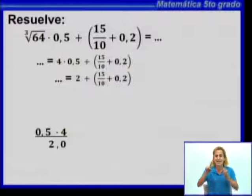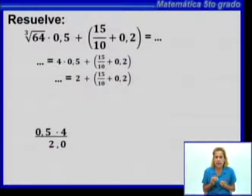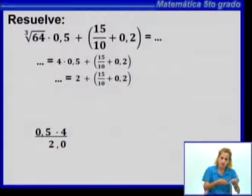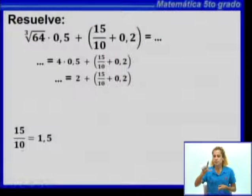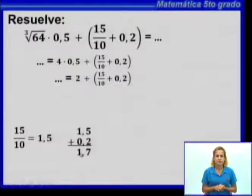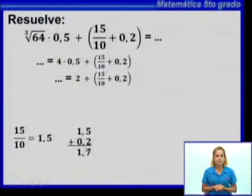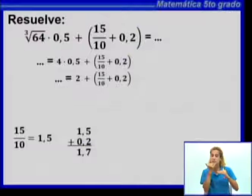Ahora hallamos el otro sumando, el que está entre paréntesis: la adición de la fracción 15/10 más 0,2. Lo pueden resolver trabajando con fracciones o con expresiones decimales según les sea más fácil. Vamos a convertir 15/10 como expresión decimal: como el denominador es 10, sería 1,5. Entonces 1,5 más 0,2 me queda planteada la adición, que es igual a 1,7. Es muy importante la correcta colocación de los números, porque una mala colocación implica un error de cálculo.